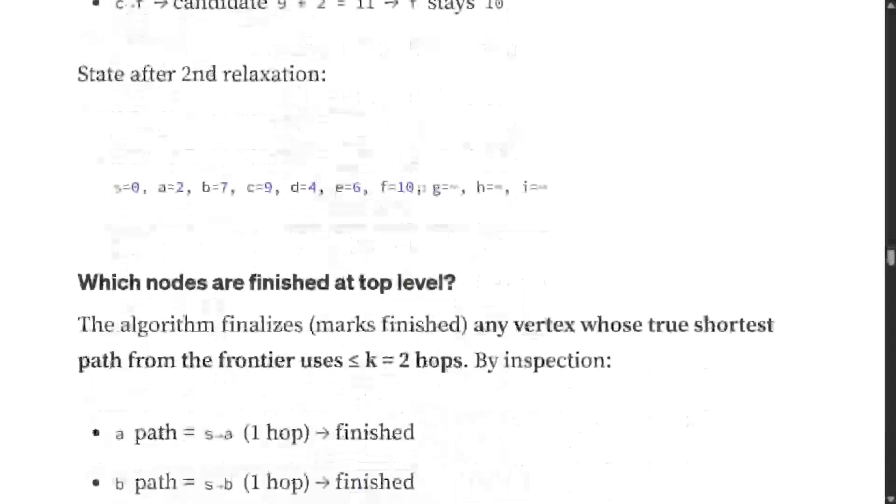Hence our final updates are: S equals 0, A equals 2, B equals 7, C equals 9, D equals 4, E equals 6, F equals 10, while these three nodes are still not reachable in K equals 2.